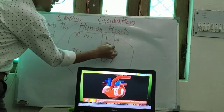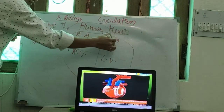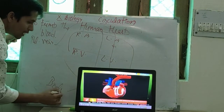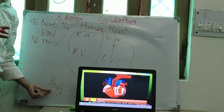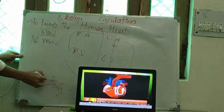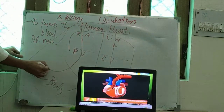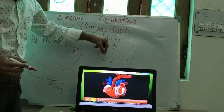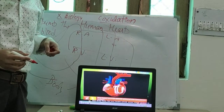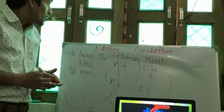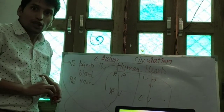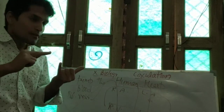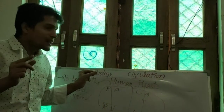Oxygenated blood is carried to the left atrium via the pulmonary vein, then from the left atrium to the left ventricle, and from the left ventricle blood goes through the body. The body gets oxygenated and CO2 is released. This is called double circulation. In double circulation there are two types: pulmonary circulation and systemic circulation.